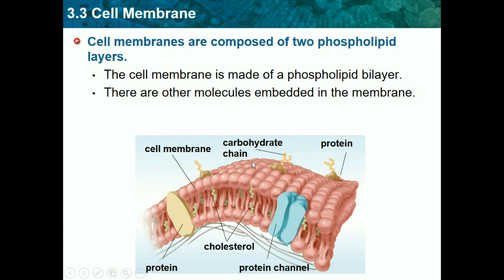There are other molecules also embedded in the membrane in different areas. There's a protein channel, which allows proteins to come in and out of the cell. There's cholesterol just hanging around, there are carbohydrate chains, and there are proteins scattered throughout. They're not in specific areas of the membrane itself.